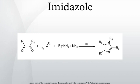Salts of imidazole where the imidazole ring is in the cation are known as imidazolium salts. These salts are formed from the protonation or N-substitution of imidazole and have been used as ionic liquids and precursors to stable carbenes. Salts where a deprotonated imidazole acts as anion are also possible; these are known as imidazolide or imidazolate salts.